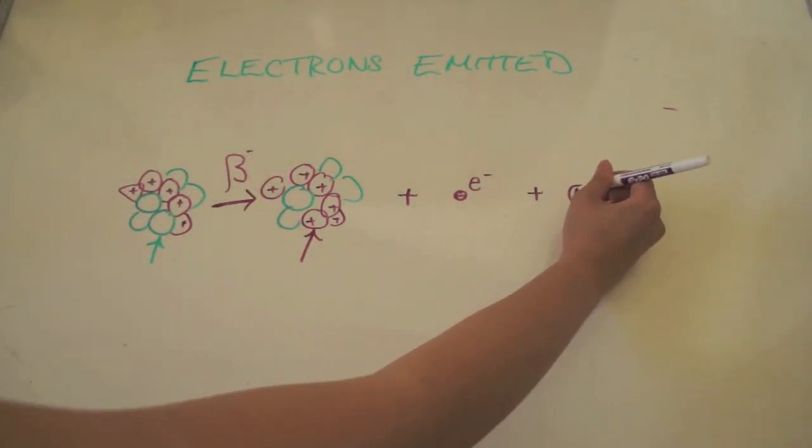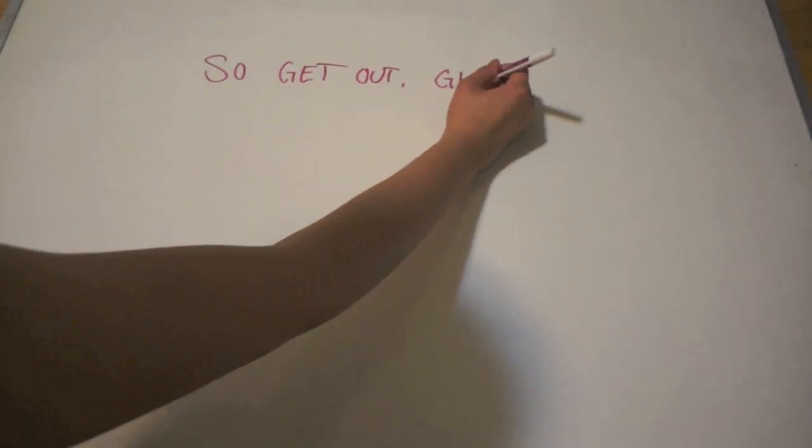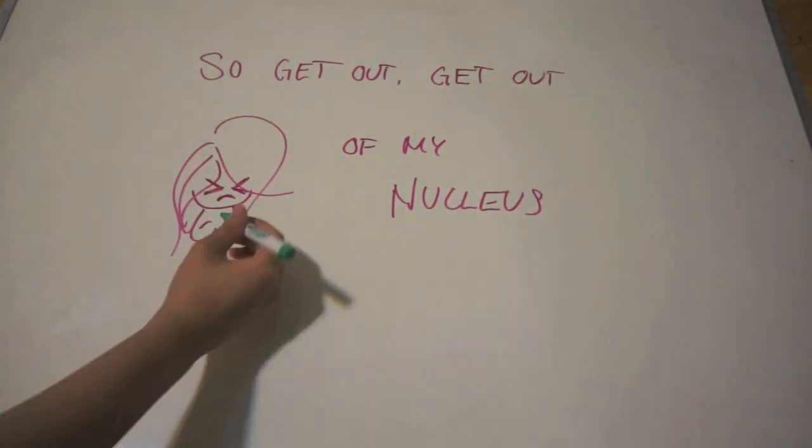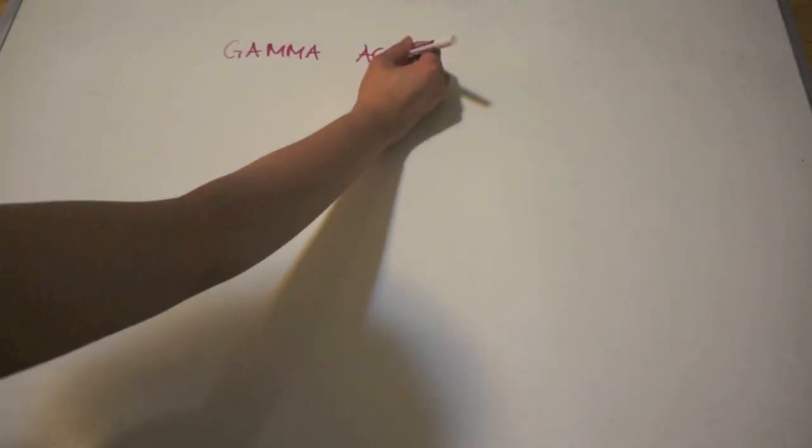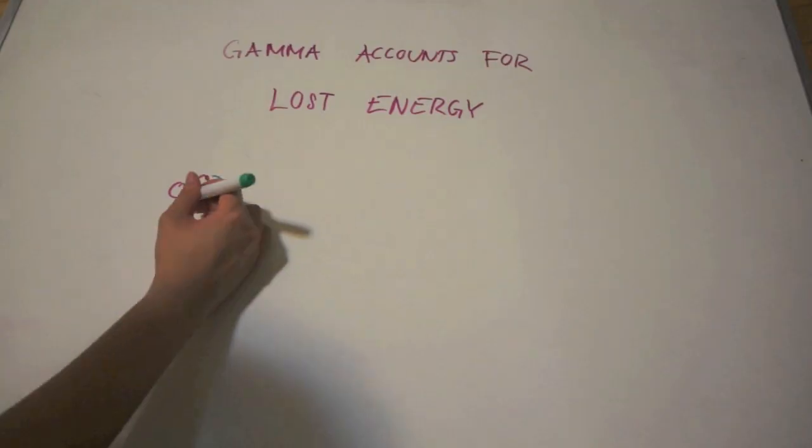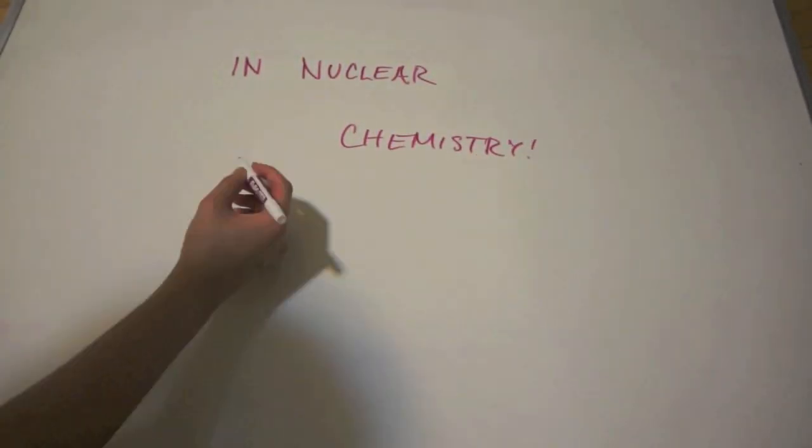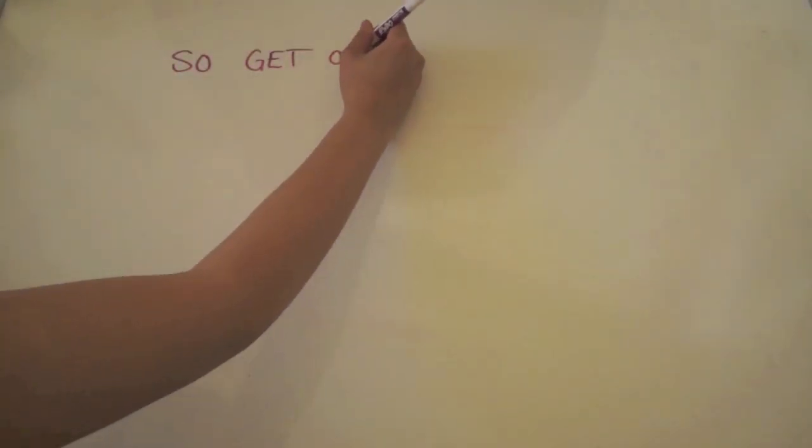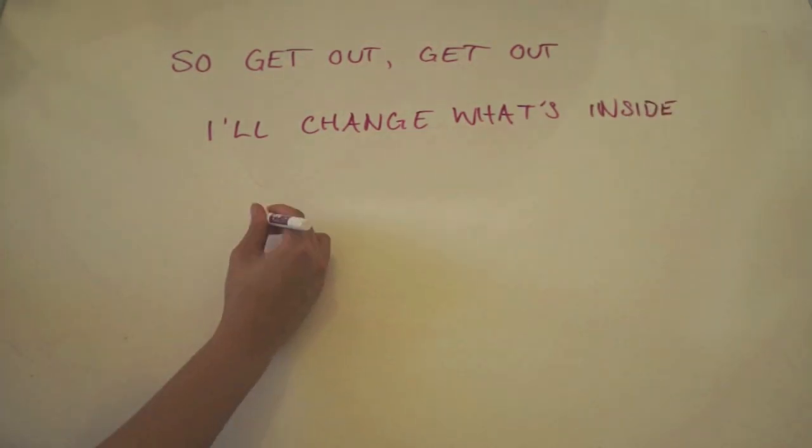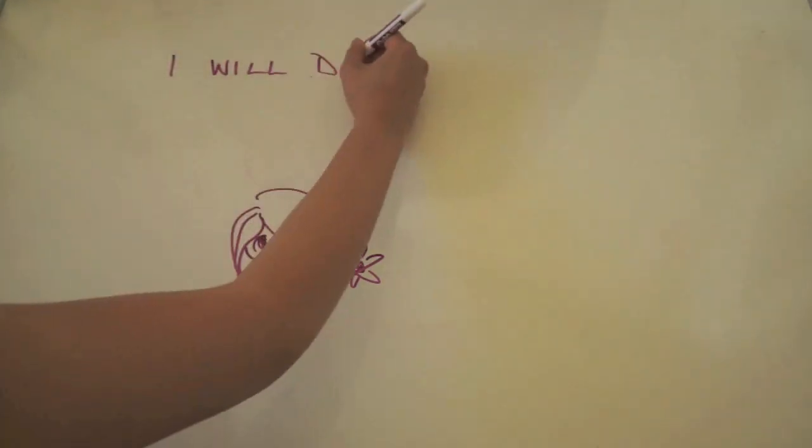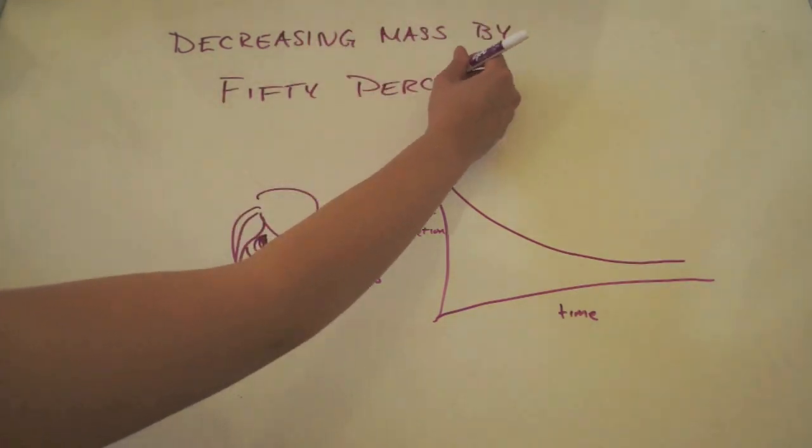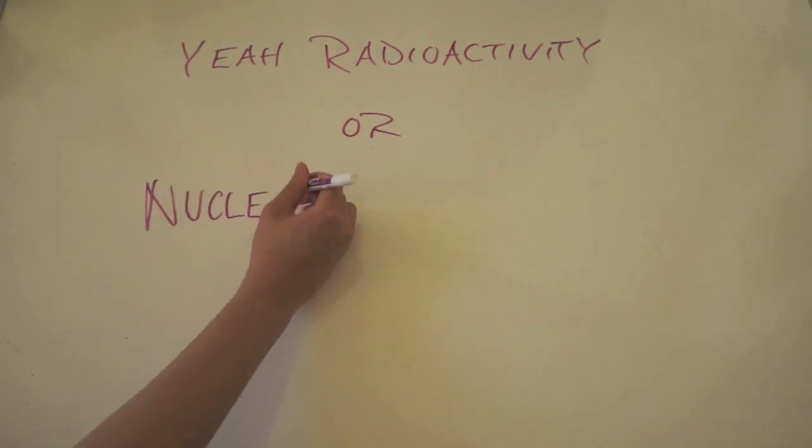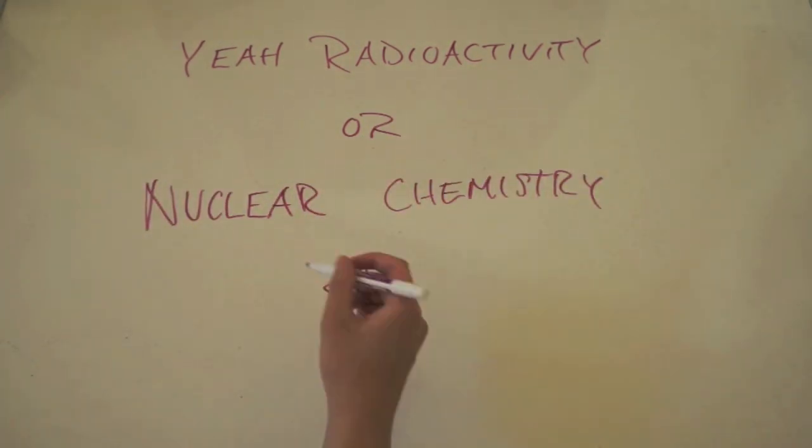Electrons emit it. So get out, get out of my nucleus. Alpha or beta, I won't live. Gamma accounts for lost energy in nuclear chemistry. Get out, get out, I'll change what's inside. I will decay with half-life, decreasing mass by 30%. Yes, radioactivity or nuclear chemistry.